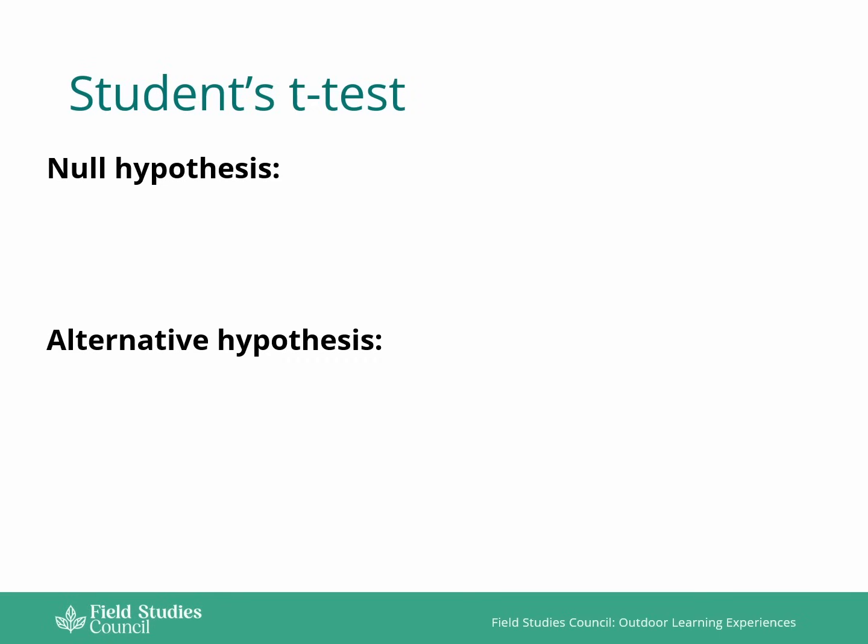So we start by assuming that there's no difference or relationship and then try to collect evidence to reject this statement, leaving ourselves no alternative but to accept the alternative option. In this example, our null hypothesis is going to say that there's no difference between the two data sets.